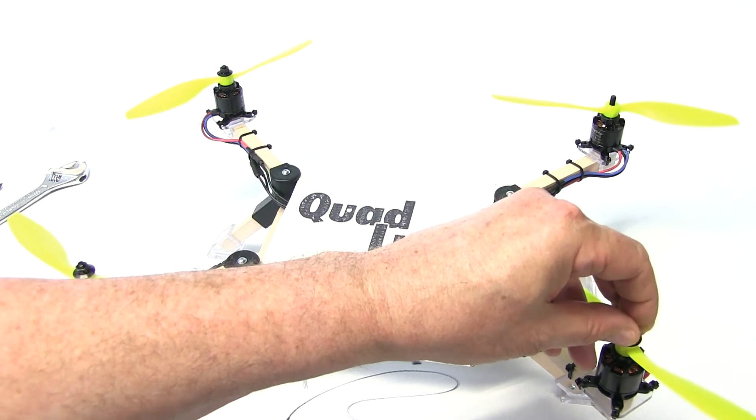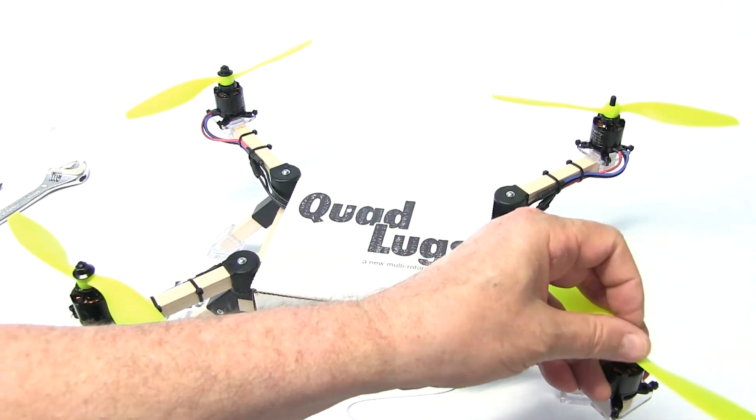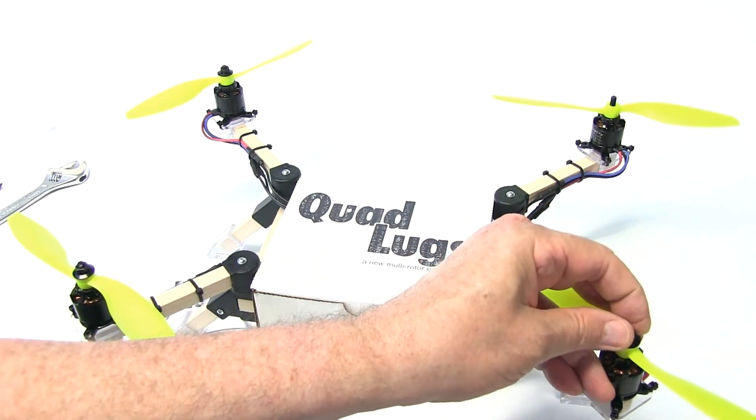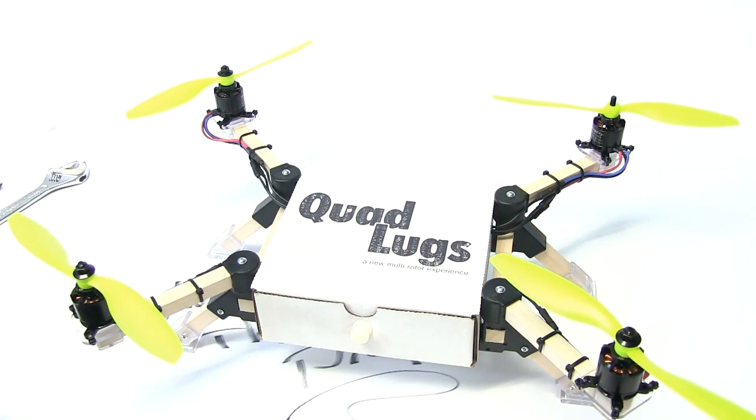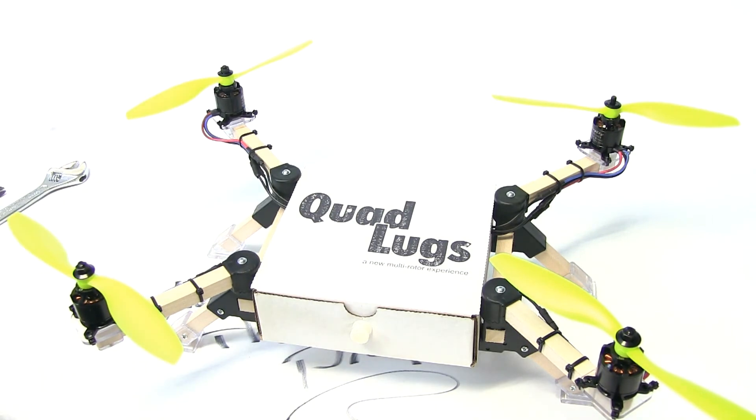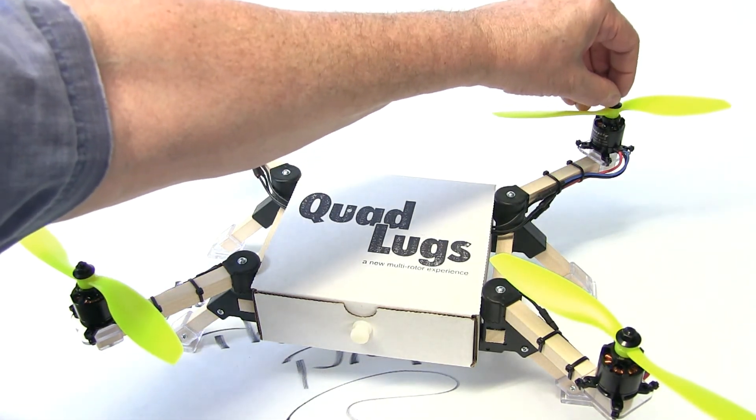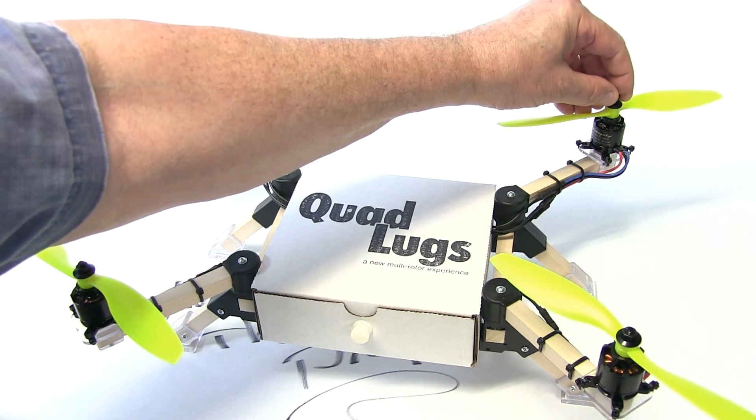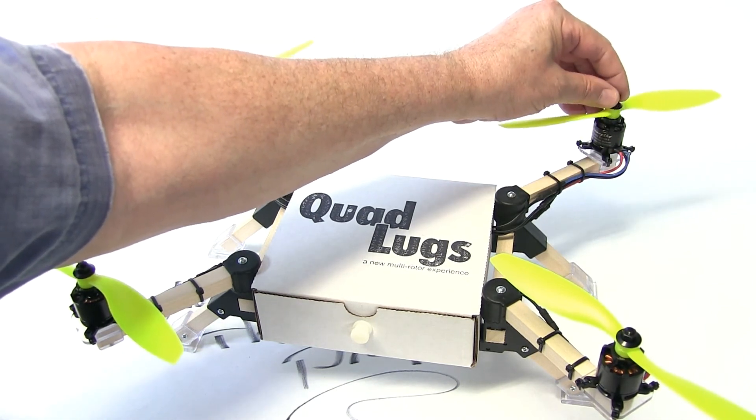We want to remember that the props really don't need to go on until you're ready to fly. Anytime you're working on your quad, make sure and take the props off. If you're indoors and you are plugging in your quad, I would also make sure that the props are off - just safety. You really don't need the props until you're ready to fly.